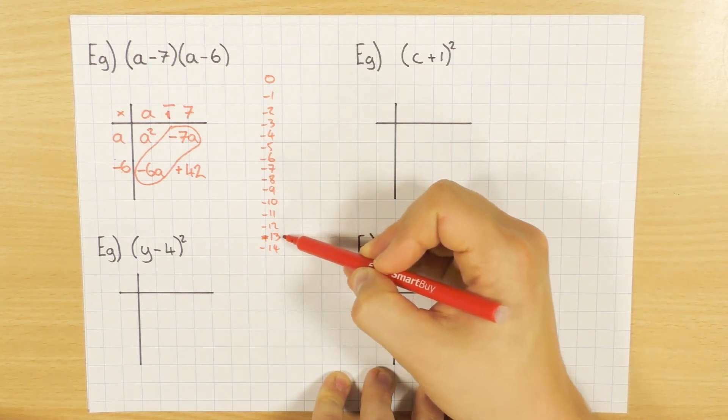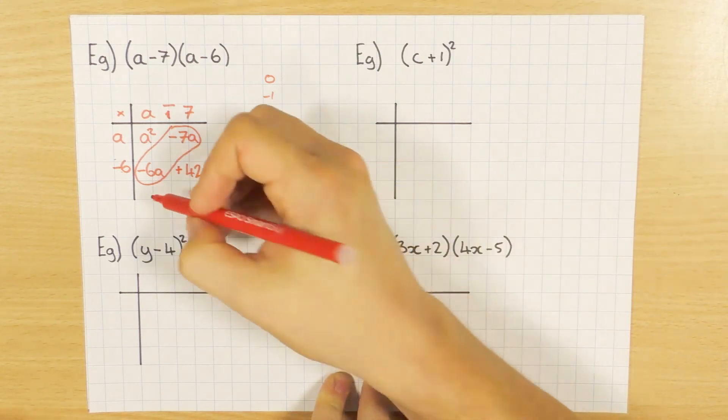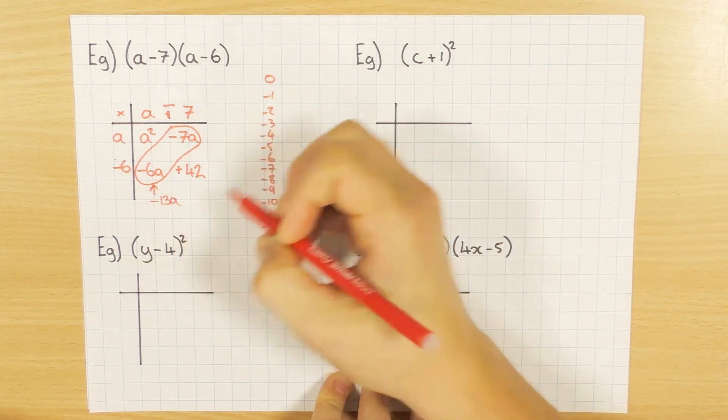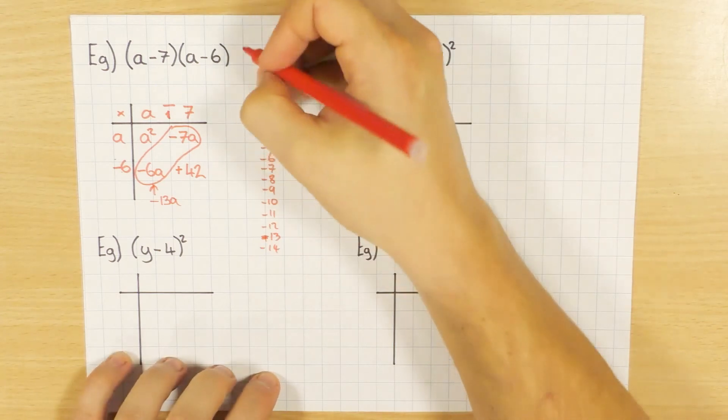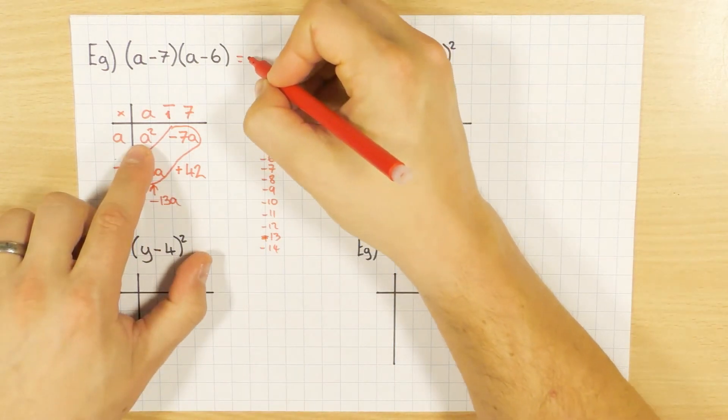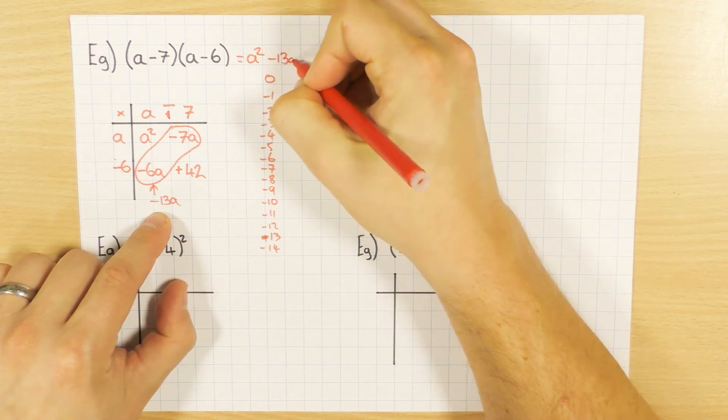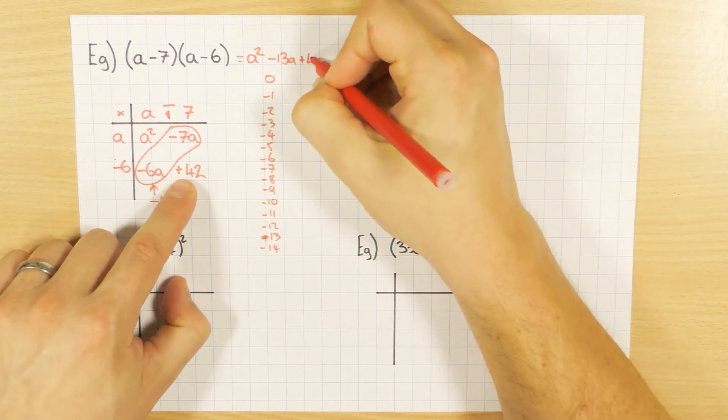So I'm at here, so 1, 2, 3, 4, 5, 6. So I'm at minus 13. So this will be minus 13a. And don't forget to write out your final answer. This time I haven't got x's, I've got a. So a squared, my minus 13a which I simplified, and my plus 42.